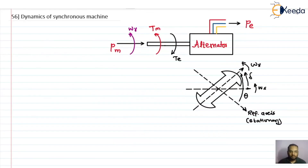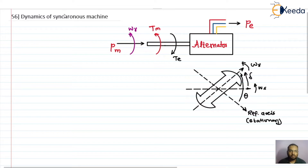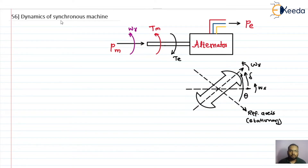In our previous lectures we have discussed what is power system stability and also the classification of power system stability. In that we learned the different types: frequency stability, voltage stability, and rotor angle stability.